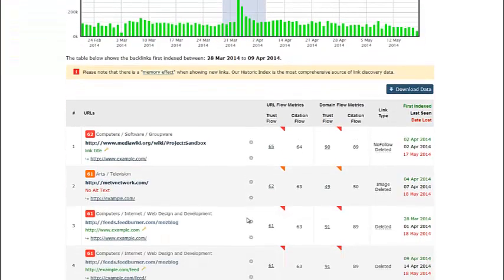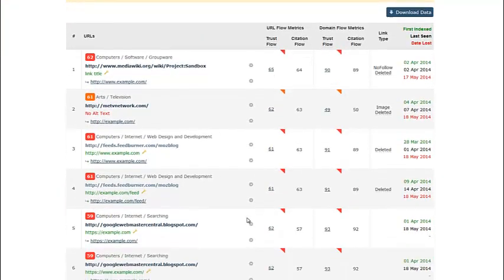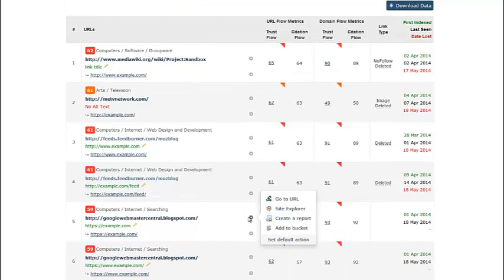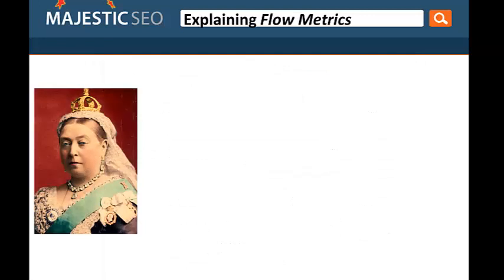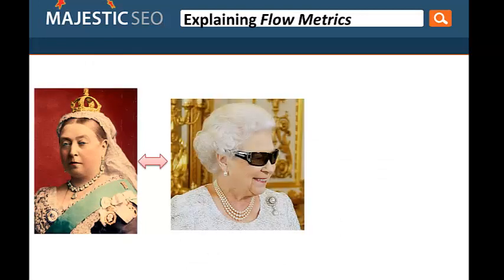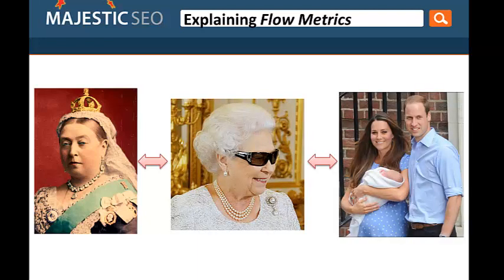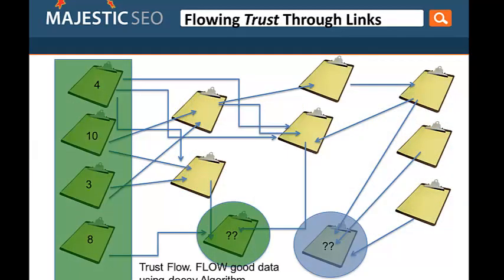To help us visualise how Flowmetrics work, let's imagine a family tree. Characteristics are passed down through a family in a similar way as our Trust and Citation Flowmetrics are flowed through the web. For example, let's take the Royal Family. Queen Victoria is an ancestor of the Queen of England, who now has grandchildren, so we can predict a lot about baby George — his title, his future job, income, hair colour, eye colour and who he will grow up with, all because of what we already know about the Royal Family.